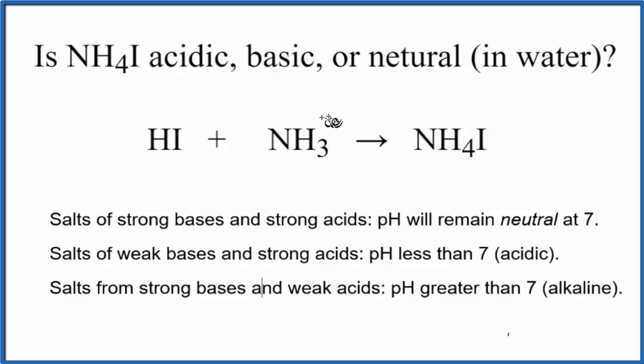To do that, we need to look at the equation, the neutralization reaction, that produces the NH4I. So here we have hydroiodic acid plus ammonia, NH3. These two come together, we have a neutralization reaction that produces this NH4I. Once we have this equation,